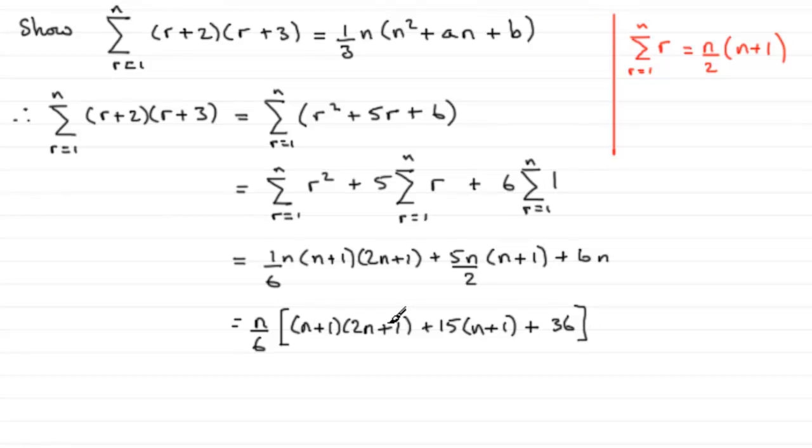Now if we expand this and group up terms, you should find you end up with n over 6, and then you've got 2n-squared plus 18n plus 52. Now 2 is a common factor here, so I could pull out 2 or divide through top and bottom by 2. If we do that here, we can get just n-squared, 9n, and half of 52 is going to be 26, as long as we divide the 6 by 2 and we get n over 3.